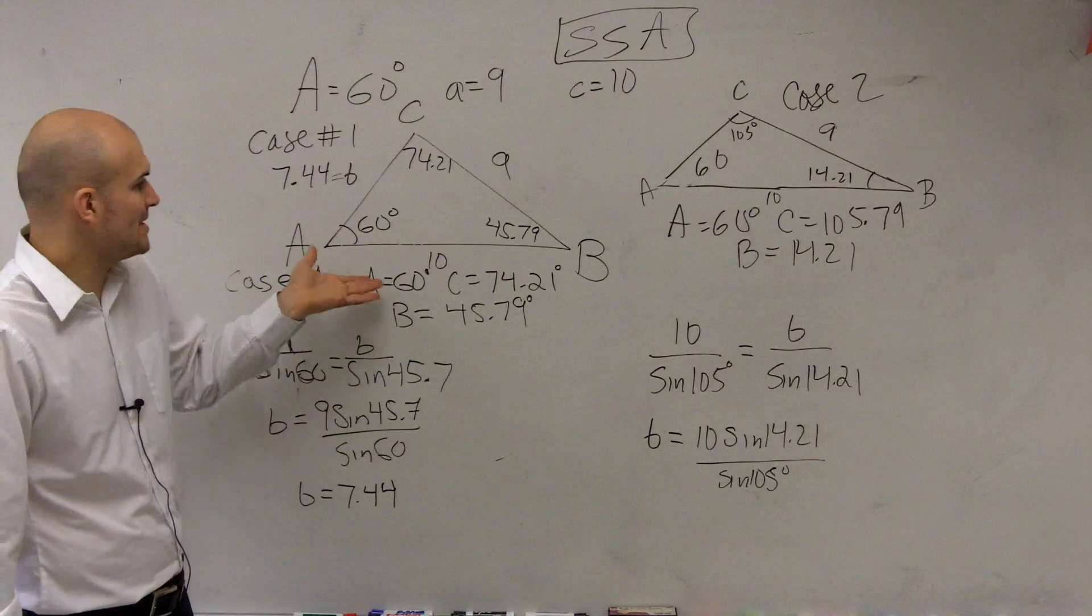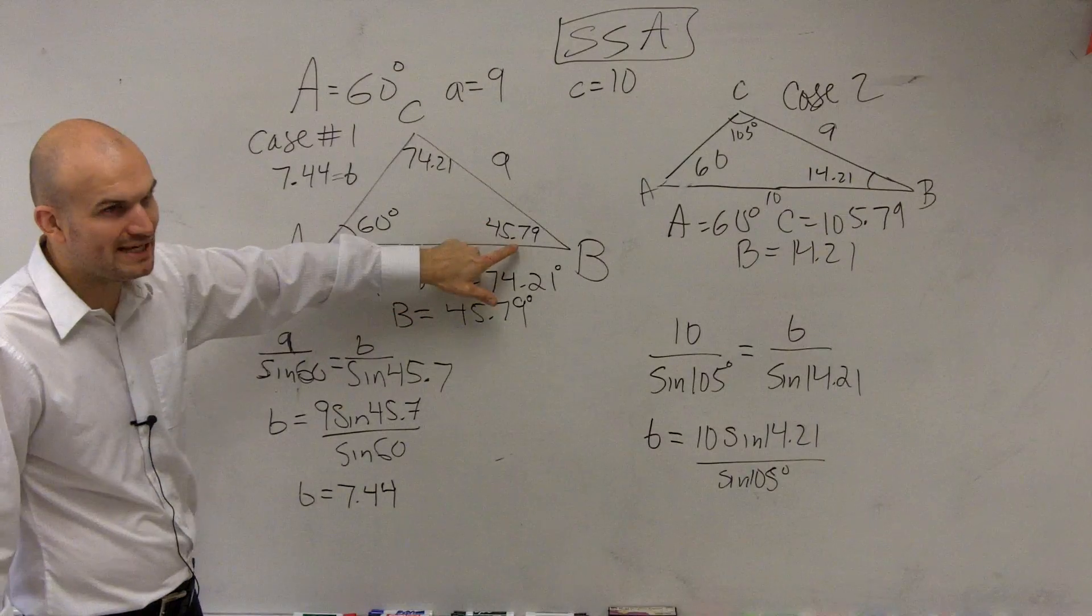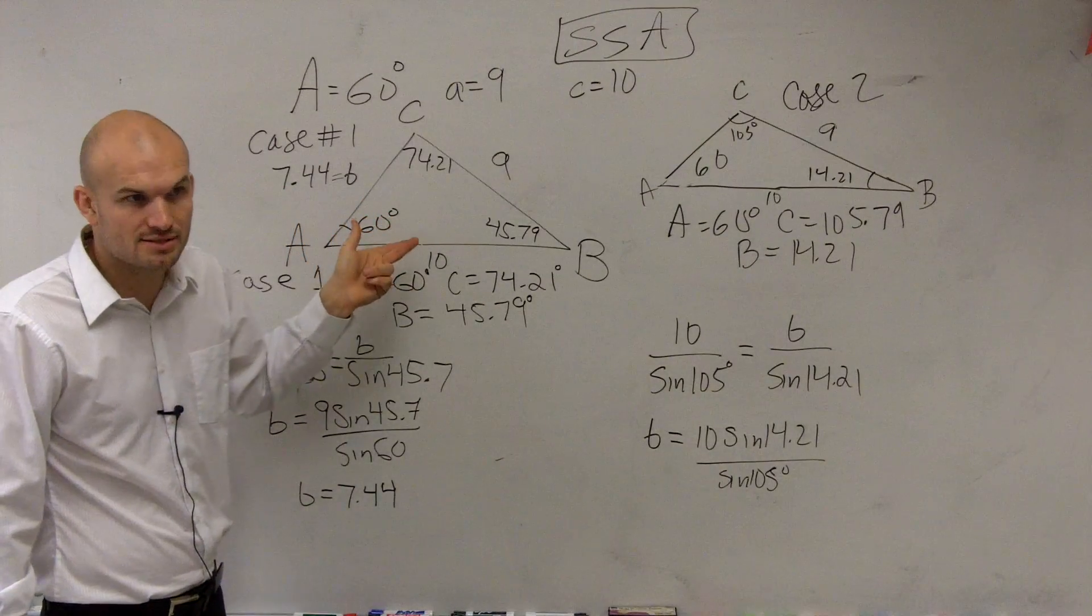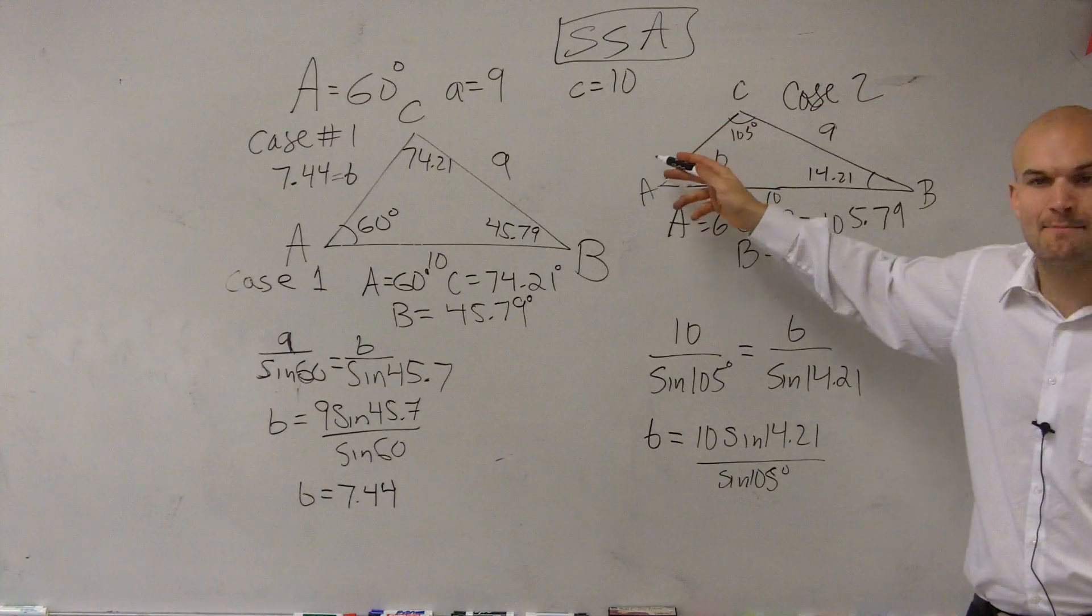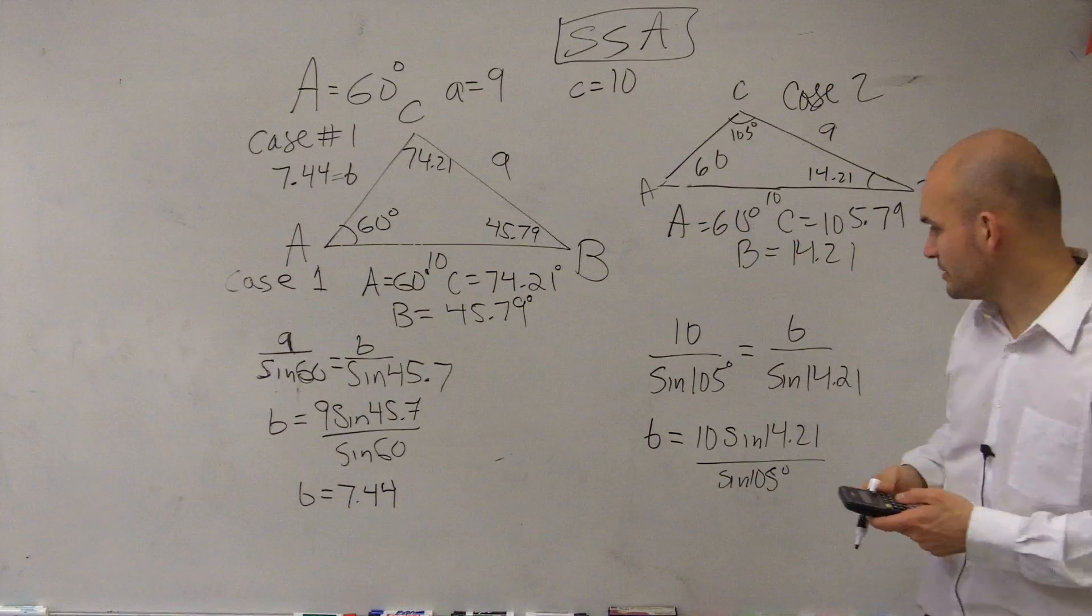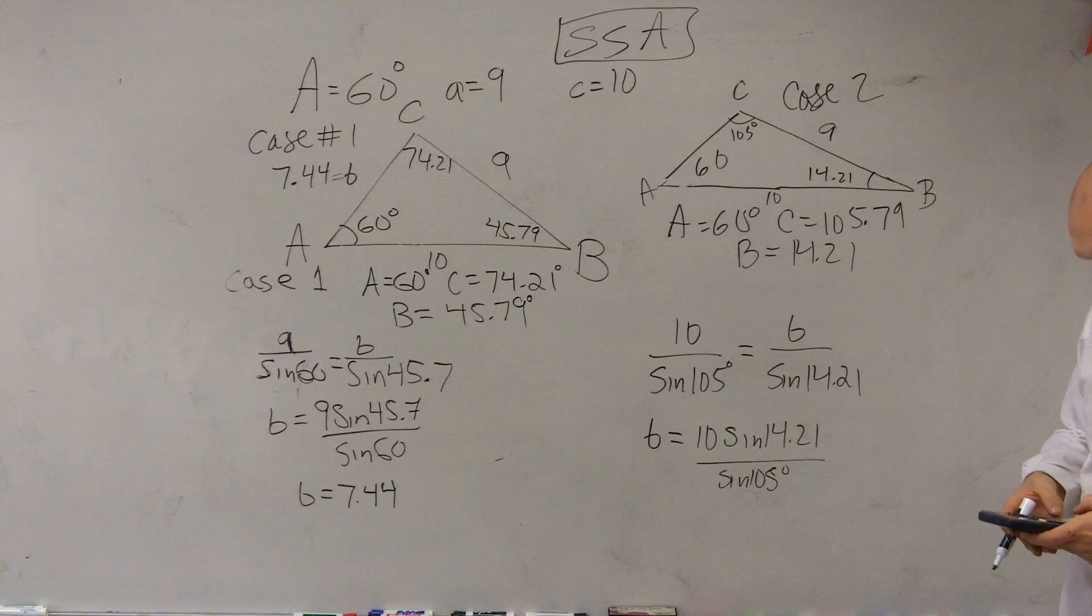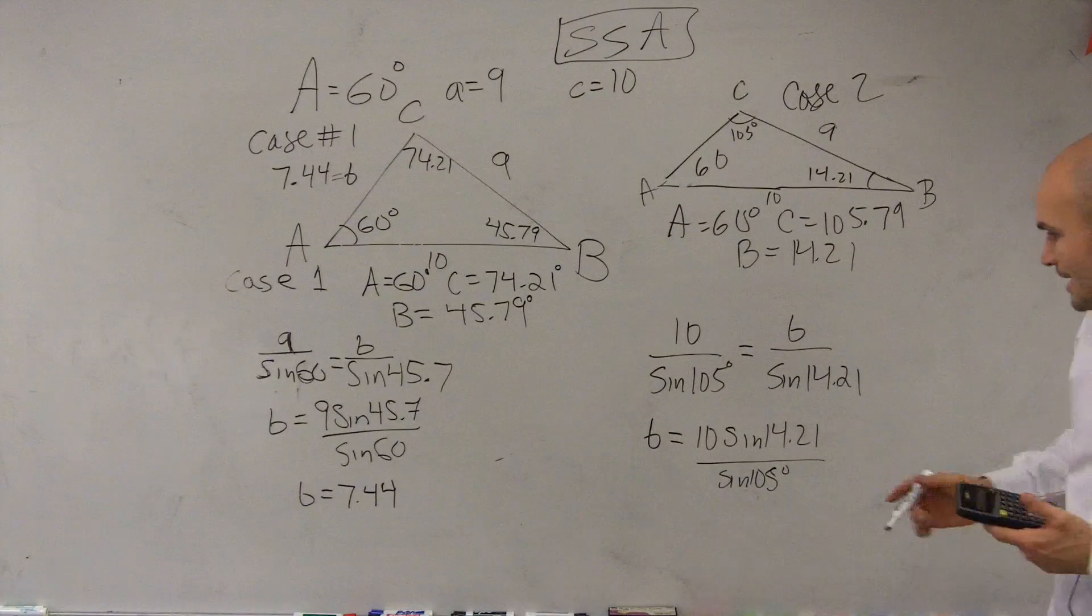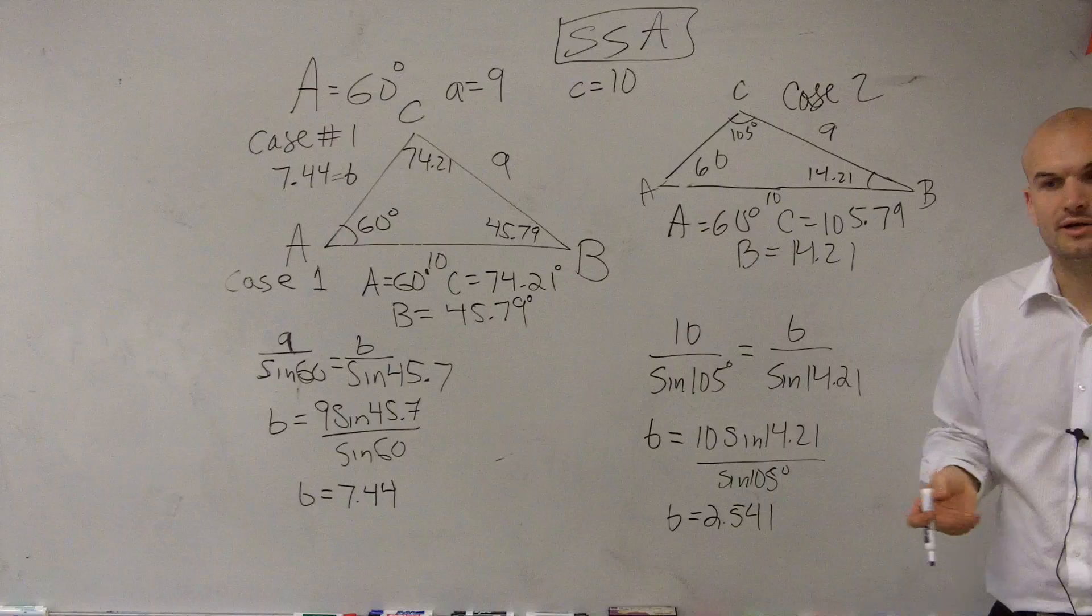So, let's go and figure out what each value of B is. Because for each triangle, B is going to be different. So, I have 45.79 sine times 9 divided by 60 sine. And I get, in this case, B is equal to 7.44. So, for in this triangle, in case number one, I say 7.44. And let's look at it. Does that kind of make sense? Well, at 60 degrees, my side length is 9. At 74 degrees, my side length is 10. So, if my angle B is smaller than all those other two angles, then length B should be smaller. Does that kind of make a little sense? So, now, if I give an angle 14.21, do you think my new B is going to be larger or smaller than 7.44? Should be smaller. So, let's go and take a look. See if we did the math correctly. So, I do 14.21 sine of that times 10 divided by 105 sine. And I get B equals 2.541. And there you go. There's two possible answers.